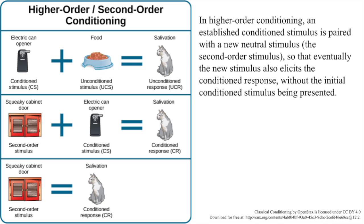Real-world application of classical conditioning: Let's say you have a cat named Tiger who is quite spoiled. You keep her food in a separate cabinet, and you also have a special electric can opener that you use only to open cans of cat food. For every meal, Tiger hears the distinctive sound of the electric can opener, and then gets her food. Tiger quickly learns that when she hears it, she's about to get fed. She will likely get excited and run to where you are preparing her food. This is an example of classical conditioning. What if the cabinet holding Tiger's food becomes squeaky? Tiger hears the squeak of the cabinet, then the electric can opener, and then gets her food. Tiger will learn to get excited when she hears the squeak of the cabinet.